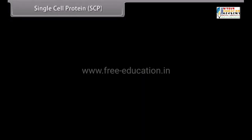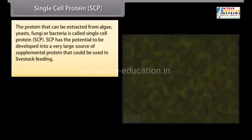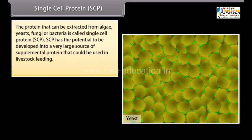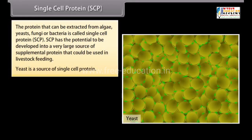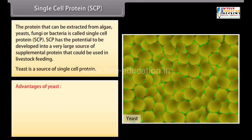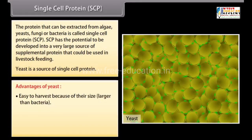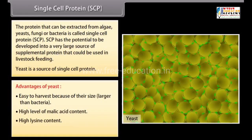Single Cell Protein (SCP): The protein that can be extracted from algae, yeasts, fungi, or bacteria is called single cell protein. SCP has the potential to be a large source of supplemental protein for livestock feeding. Yeast is a common source of SCP. Advantages of yeast include easy harvesting due to larger size than bacteria, high malic acid content, high lysine content, and the ability to grow at acidic pH.